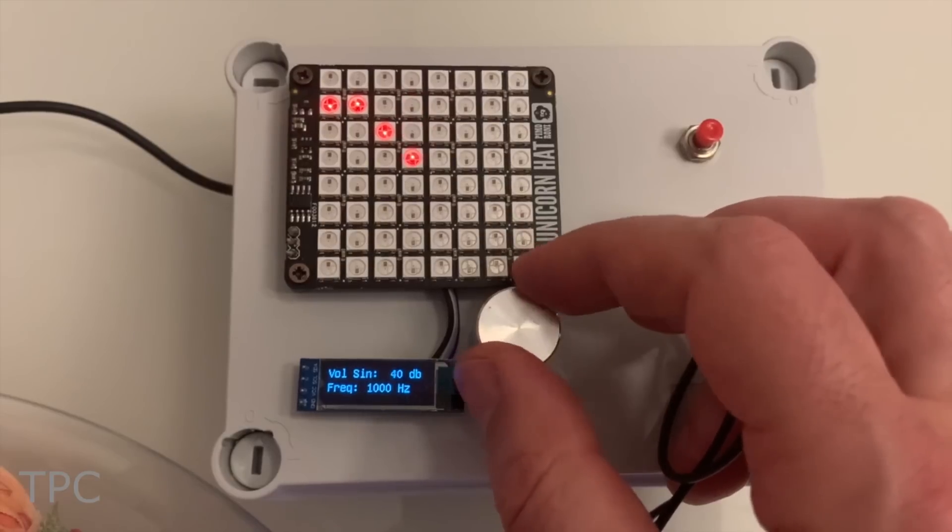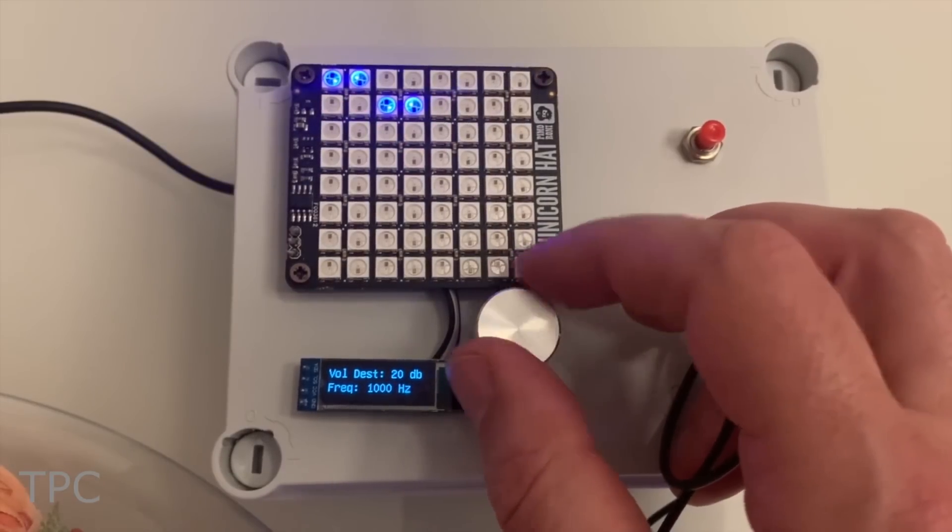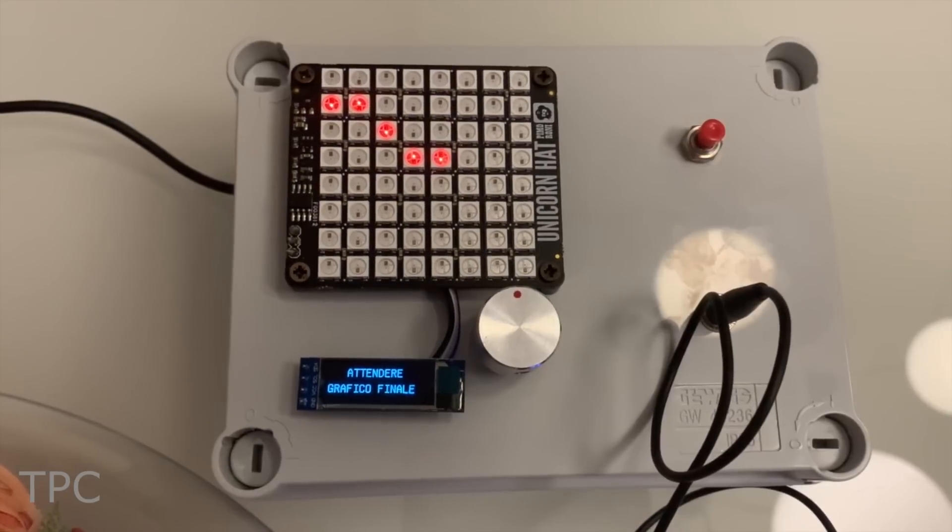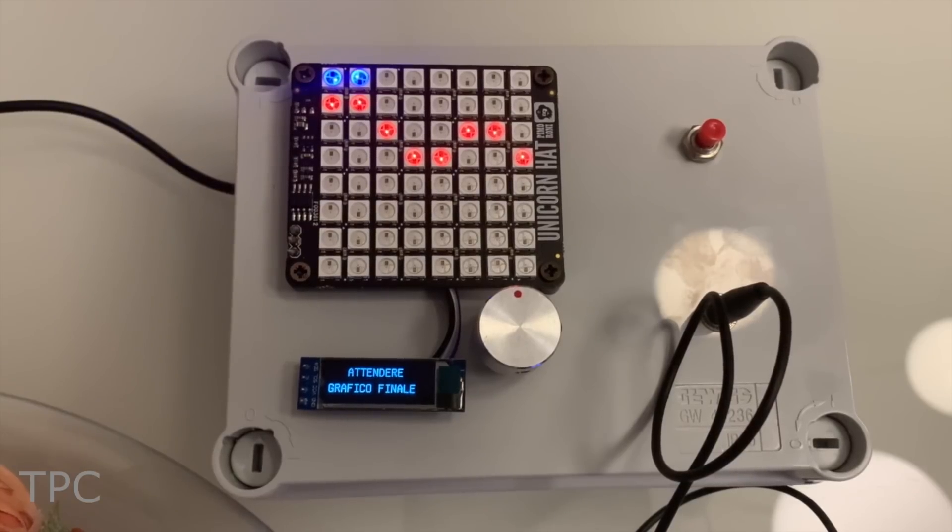After checking the left ear, you will need to check the right one. At the end of the process, you will see a graphical view of both ears. The red color represents the left ear, while the blue color represents the right one. This will tell you the quality of your hearing at each frequency.